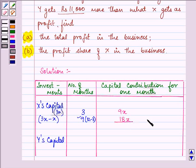So in all it will be 27X. Similarly, we will be doing it for Y's capital. It was 2X for the initial 6 months. After 6 months he added the same amount.